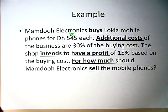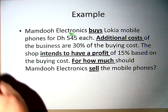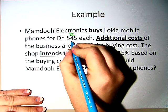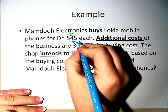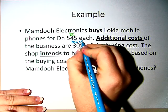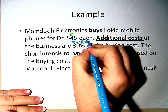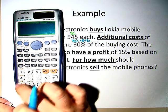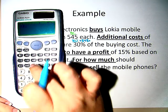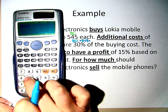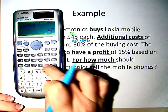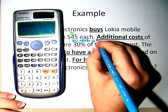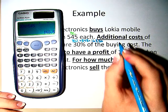Additional costs of the business are 30% of the buying costs. So 30% times 545 — we're going to get out our calculator. 30% times 545 gives me 163.50 dirhams.